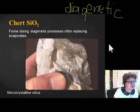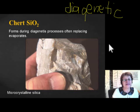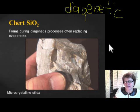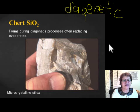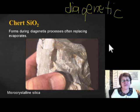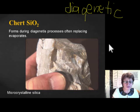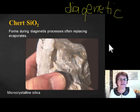Roanoke was originally called Big Lick — meaning animals used to come here and lick the salt. Some salt is still present in these rocks, but a lot of it has dissolved and been replaced by chert. Roanoke also had gypsum, which we'll discuss more later.